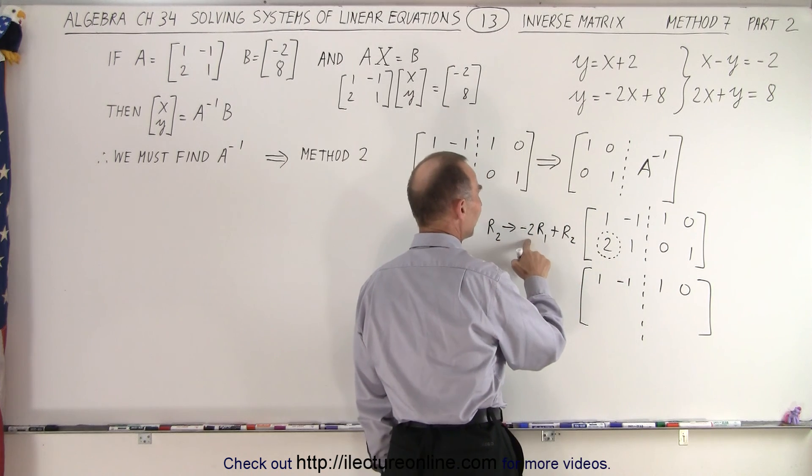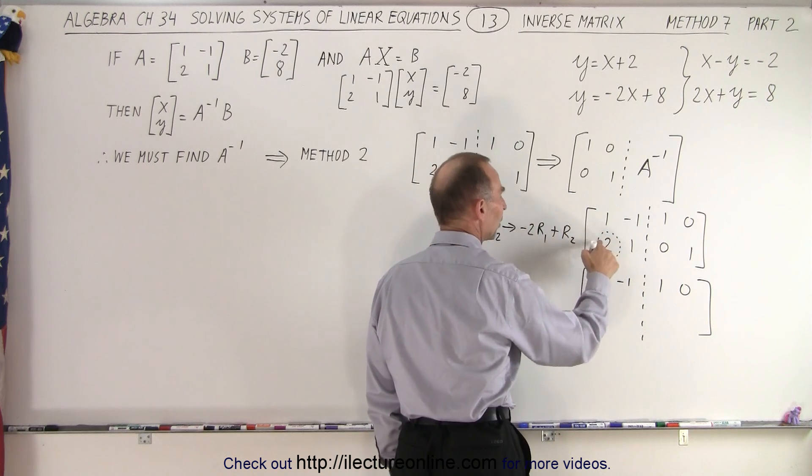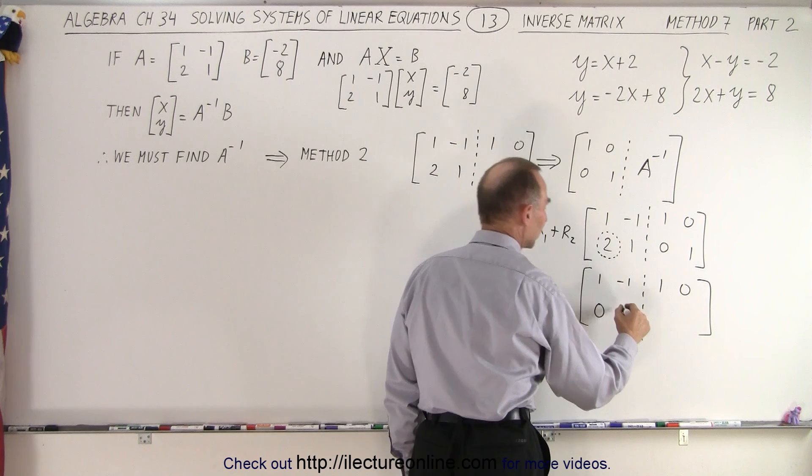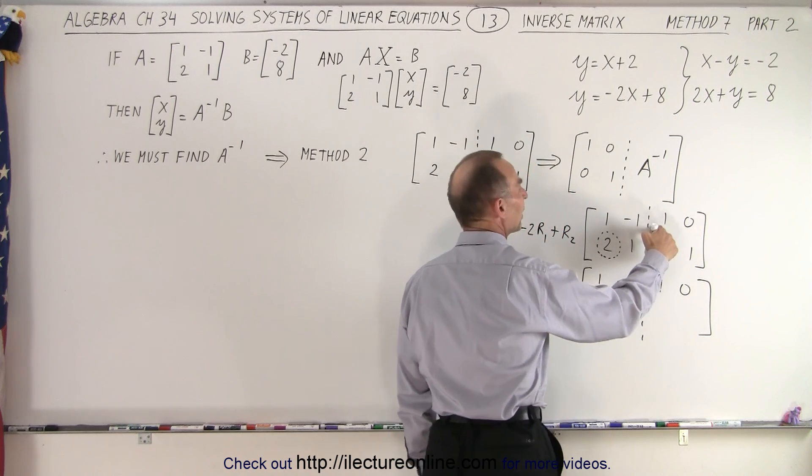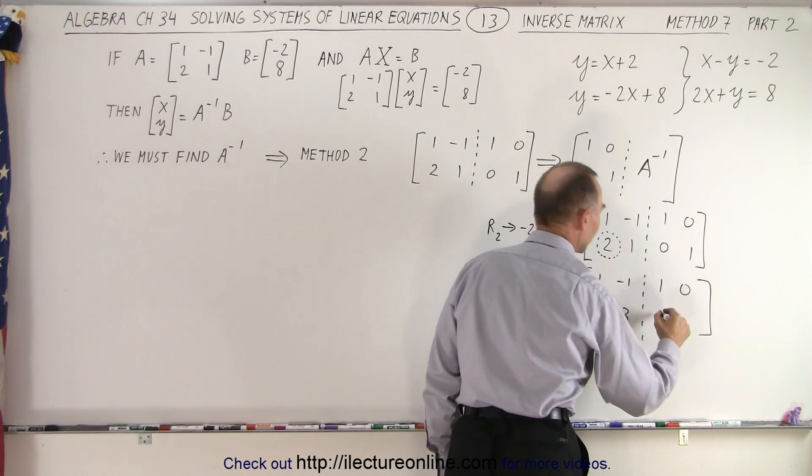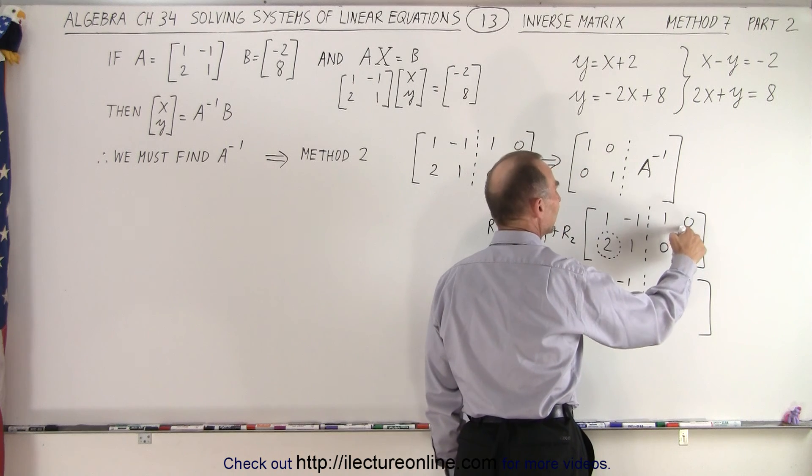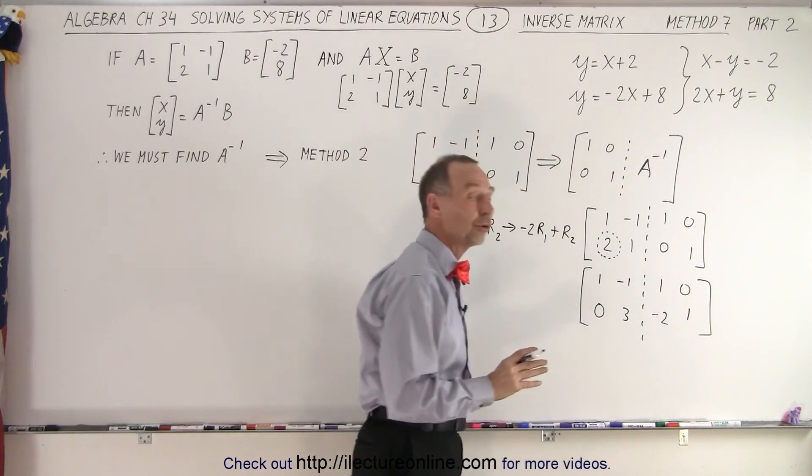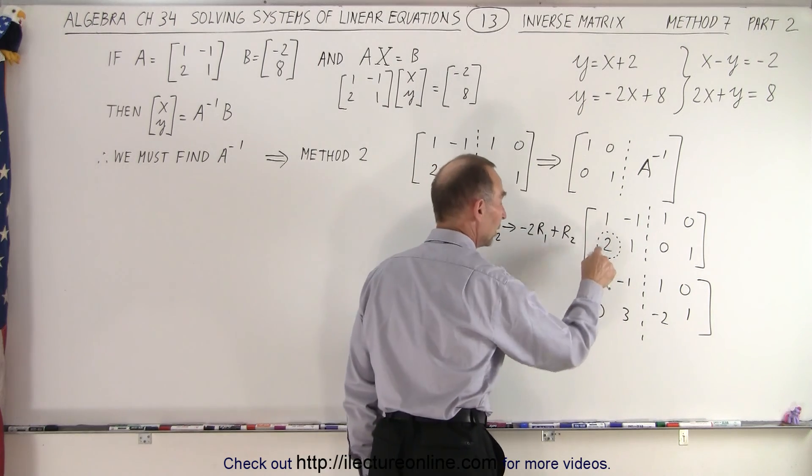But here, notice, negative 2 times 1 is negative 2 added to 2 is 0. Negative 2 times a negative 1 is 2 added to 1 gives me 3. Negative 2 times a 1 is negative 2 added to 0 is negative 2. And negative 2 times 0, that's still 0 added to 1 gives me 1. And so notice, we now have turned the 2 into a 0.